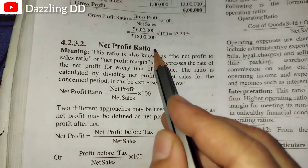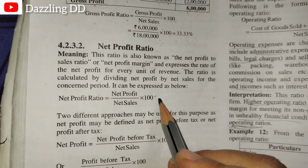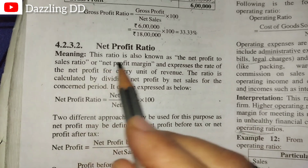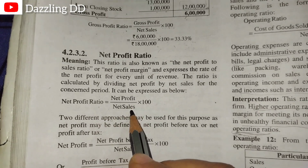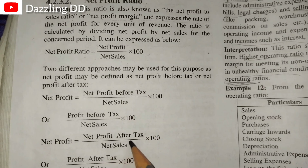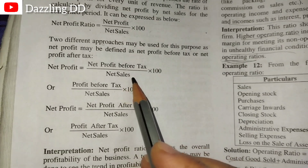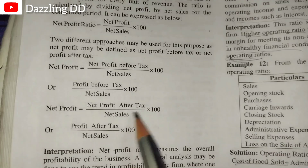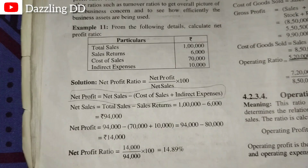Next we have Net Profit Ratio, where we compare net profit with net revenue. It is also known as the Net Profit to Sales Ratio or Net Profit Margin. The formula is: Net Profit divided by Net Sales into 100. There are two approaches — net profit before tax and net profit after tax — giving us two versions of the formula.